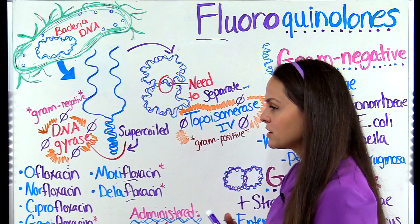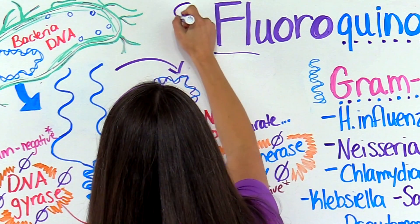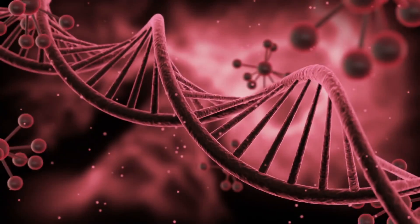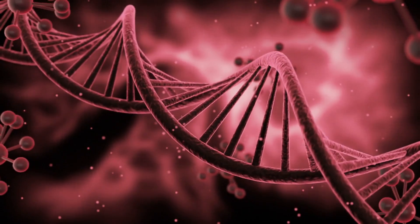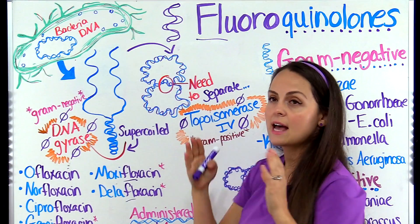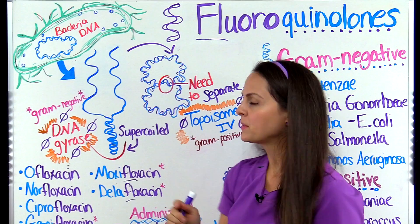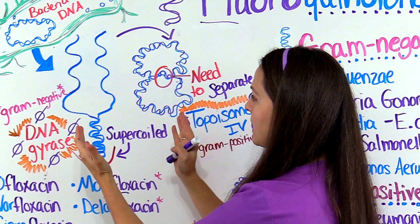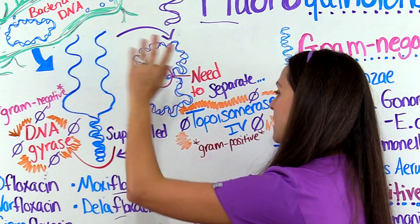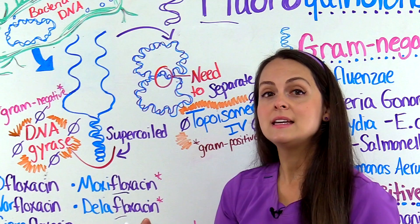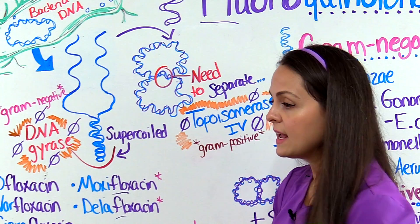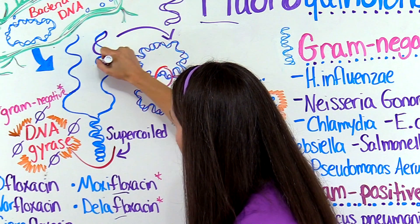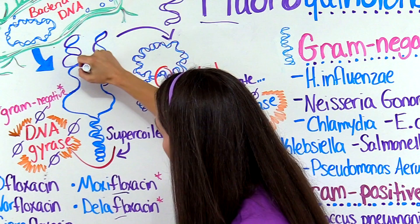To understand how quinolones work, let's simplify the DNA replication process. When we have double-strand DNA, the two strands are wrapped around each other. In order to replicate, those strands have to separate. An enzyme called helicase comes in and separates the strands. Then another enzyme called DNA polymerase comes in behind it and makes copies, sliding up and down each strand to create new copies.